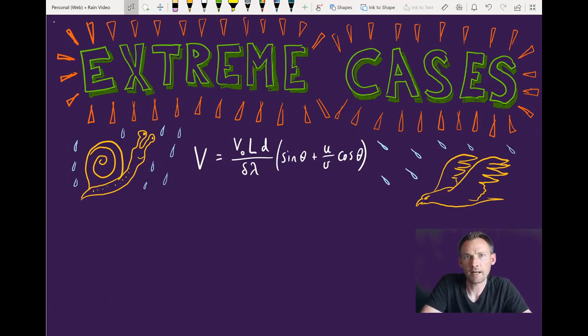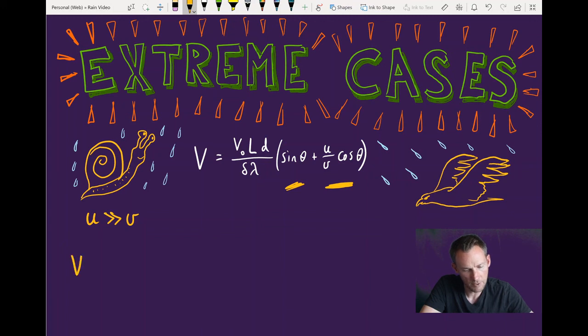Let's wrap up by considering a couple of extreme cases. And by extreme, I mean the relationship between the horizontal velocity of U or the board moving across and the vertical velocity of the rain. Let's first look at what happens if the velocity of the rain is very much greater than the velocity of U going through the rain. So this might apply to, for example, a snail crawling very, very slowly through the rain. You can see that the second term is going to be very large because U over V is going to be very big. So we can, for the moment, kind of ignore this first term, which just has sin theta and no velocities. So in that case, we have V equals v naught L D delta lambda U over V cosine theta.